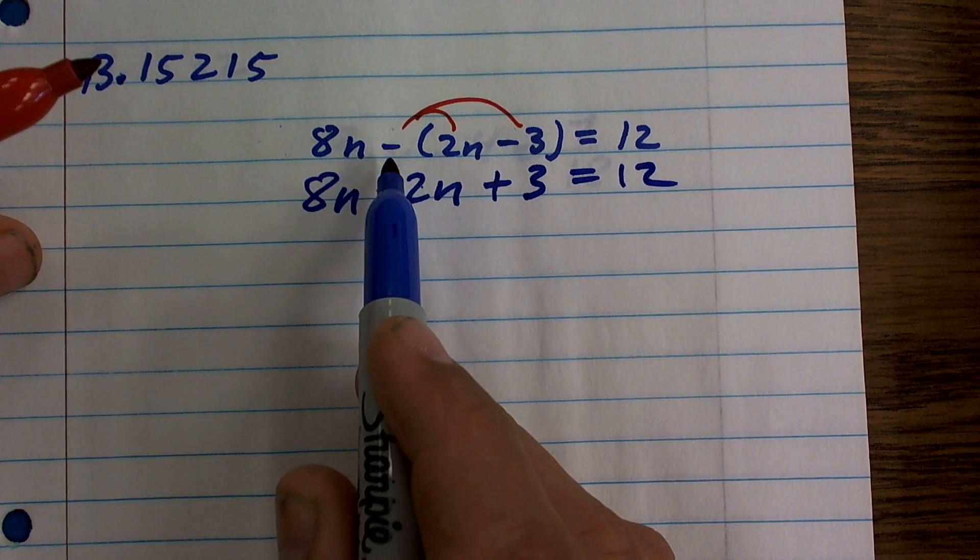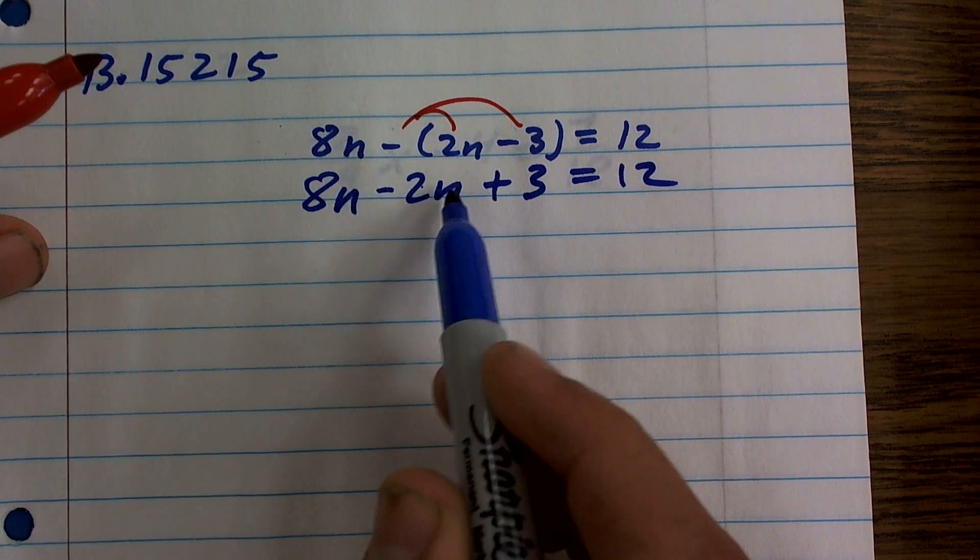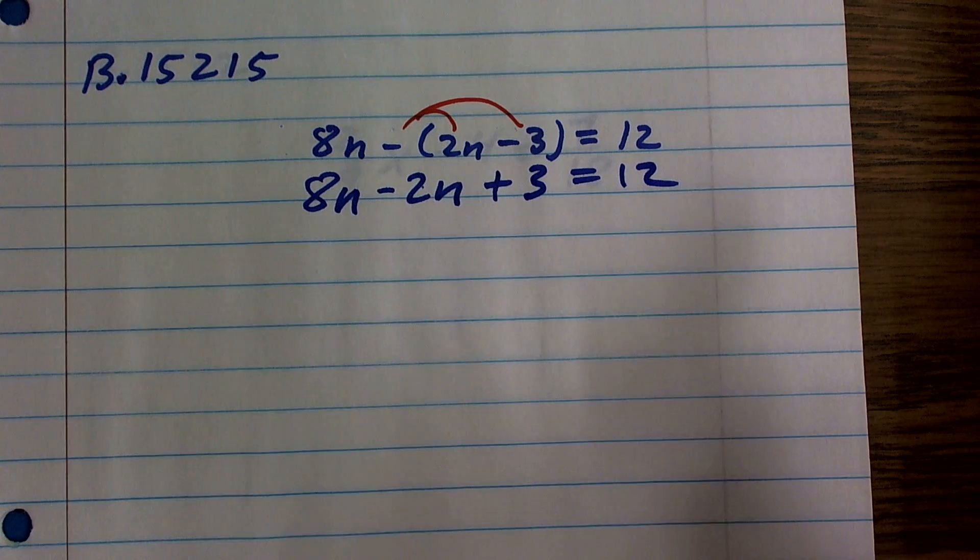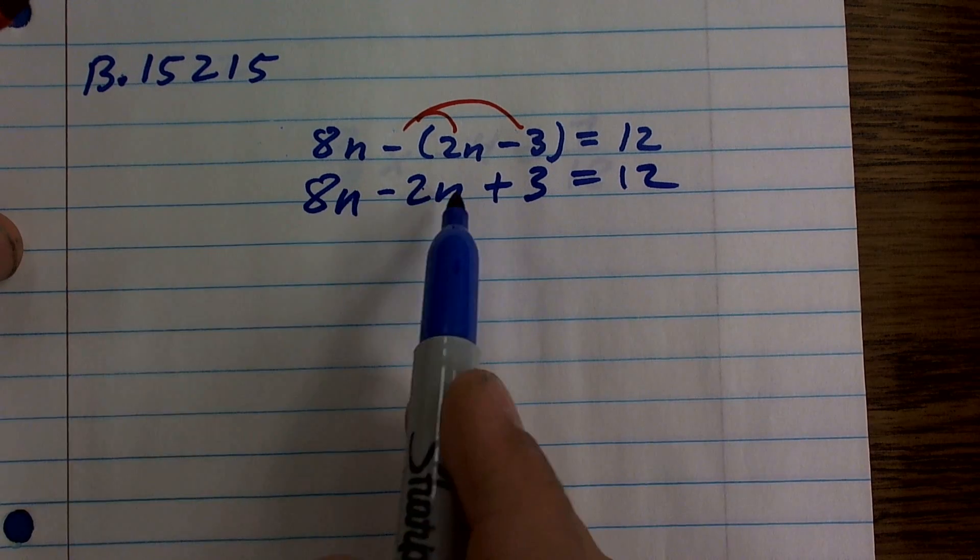Or also you can sometimes just say the opposite. The opposite of 2n is negative 2n. The opposite of negative 3 is positive 3. Now you notice I can combine these like terms.